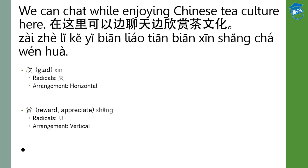In this sentence, we have omitted the subject because it is understood that we are talking about 'us'. Of course, if you want to add 'we', which is 我们, it also makes sense: 在这里我们可以边聊天边欣赏茶文化. Also, 在这里 is put in front — we don't put the location at the back because it is a description; it is usually placed at the beginning of the sentence or just before the verbs.